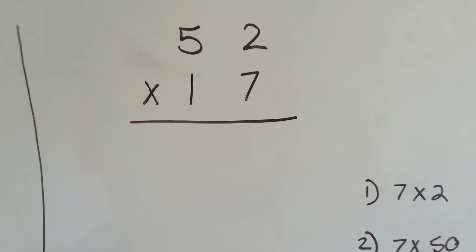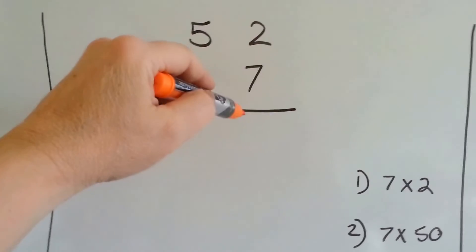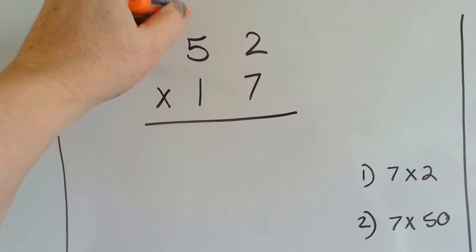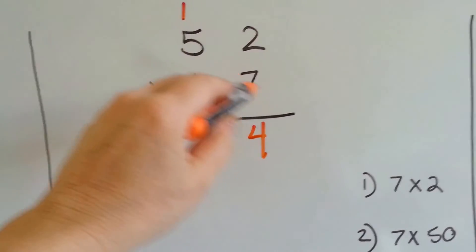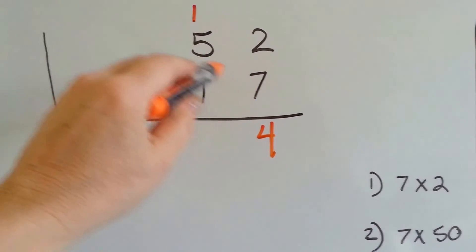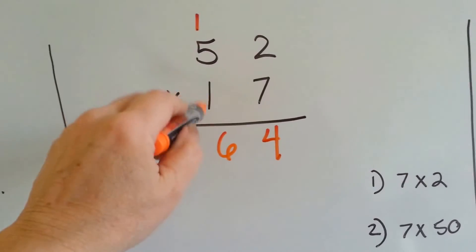We've got 52 times 17. The first thing we're going to do is multiply the 7 and the 2. 7 times 2 is 14. We carry the 1 and put the 4 down. Now we're going to do 7 times 5. 7 times 5 is 35, plus 1 more is 36.